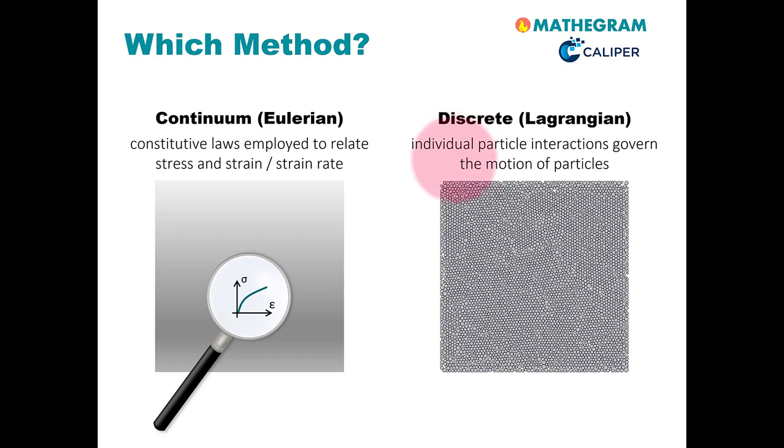In contrast to that, there are the so-called discrete or Lagrangian methods, where we track individual particles. Here particle interactions are important since they govern the motion of the particles. So we are interested in the force versus displacement or the force versus overlap behavior of the particles. We will spend enough time in later units to discuss what we mean here in detail.